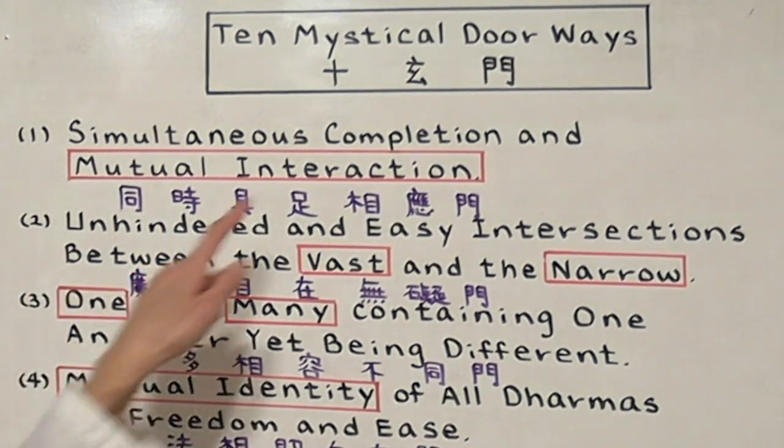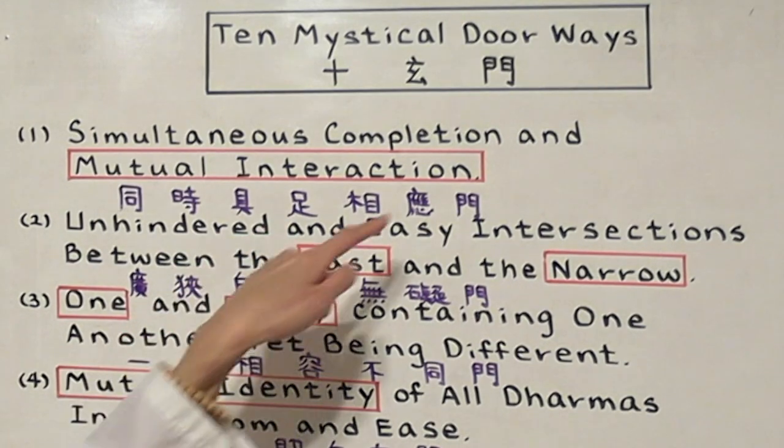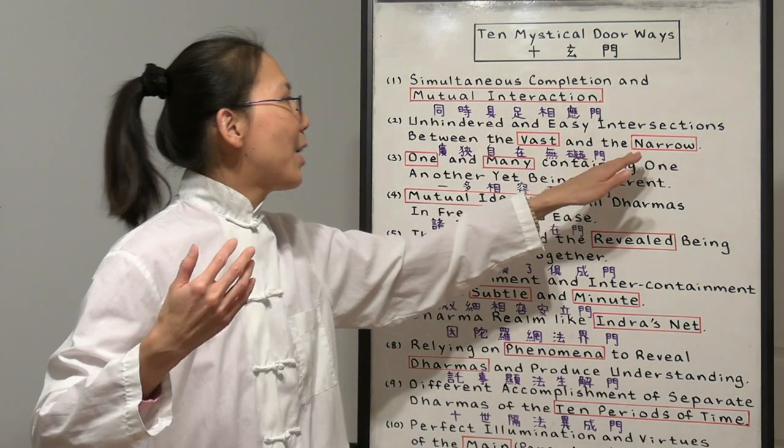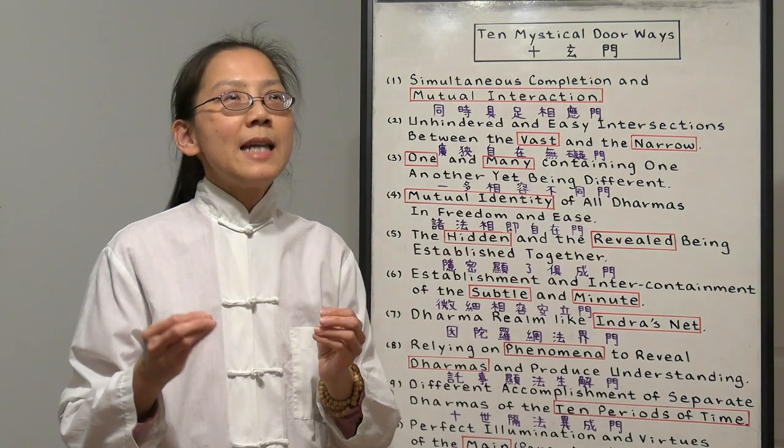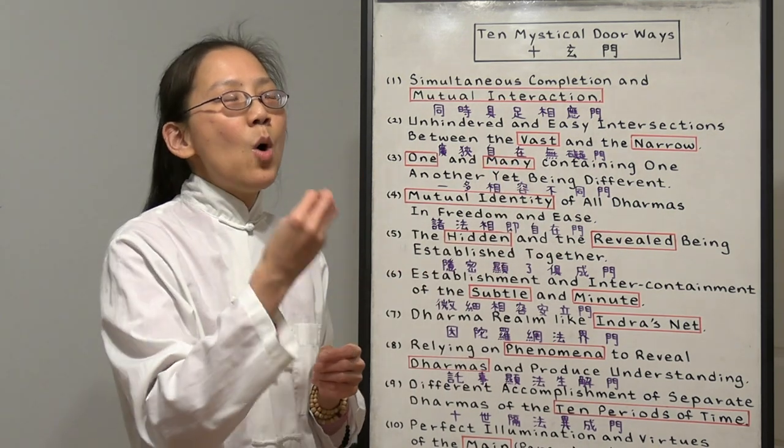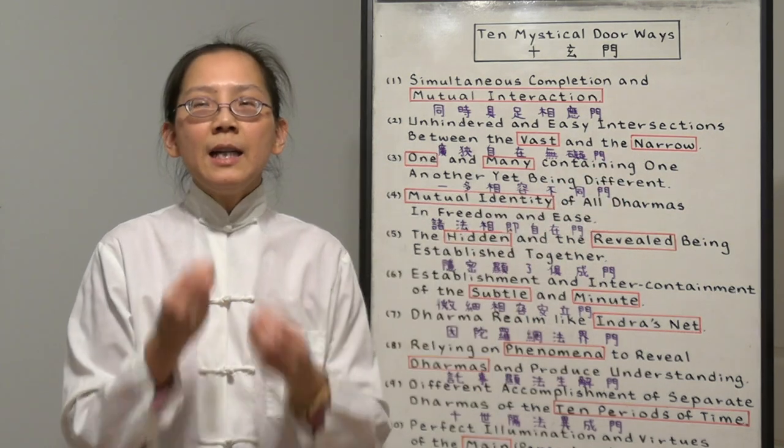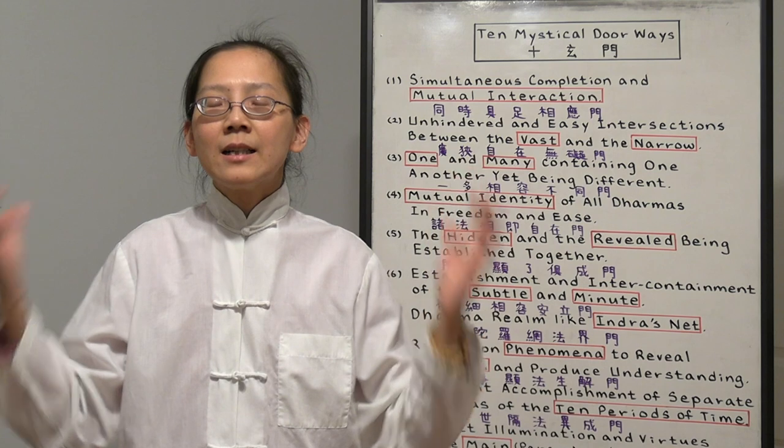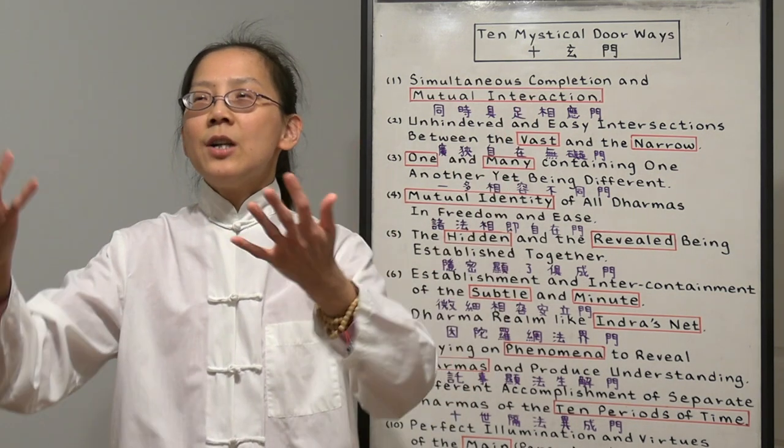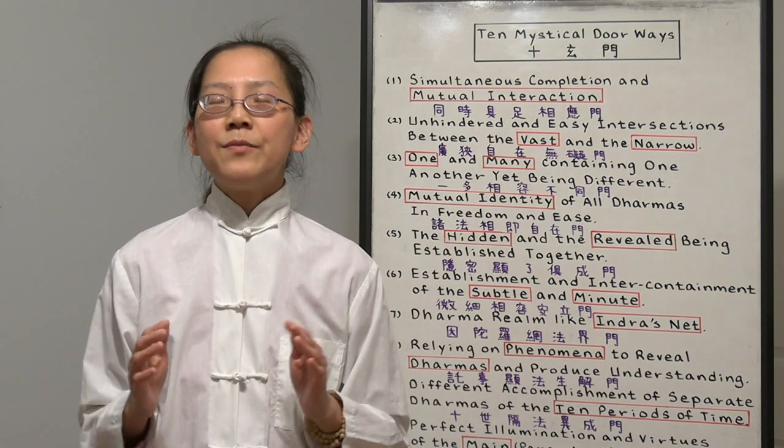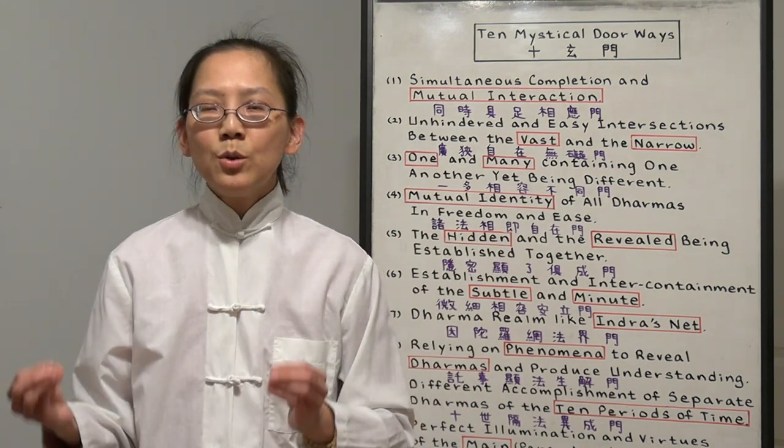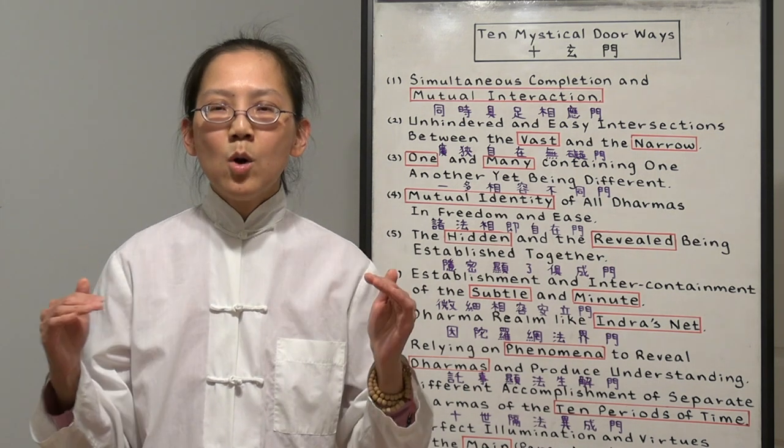Number two is the unhindered and easy intersection between the vast and the narrow. Here the comparison is between the vast, which is as a whole, and the narrow is specific parts or particular parts. For example, we are in the company. The entire company is the vast. The one single employee or the employer, that is the narrow. Every employee symbolizes the entire company and everybody is equal in this world of the Buddha. So the president is the same as the janitor because in our true Buddha nature, nobody is different from others. We are all one of the same. The contribution of the president and the janitor is the same. They just do their part differently but they are equal in their Buddha nature.